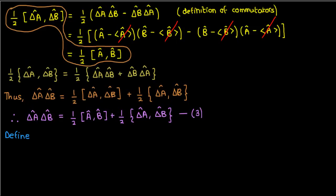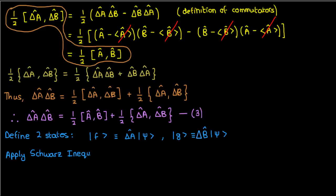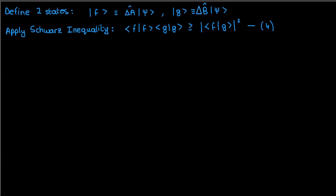Now let's define two states: |f⟩ = Δâ|ψ⟩ and |g⟩ = Δb̂|ψ⟩. Let's apply the Cauchy-Schwarz inequality to these two states. From a previous video on properties of Dirac notation, I discussed the Schwartz inequality, which I'll apply to f and g here. The result I'll label as equation 4.